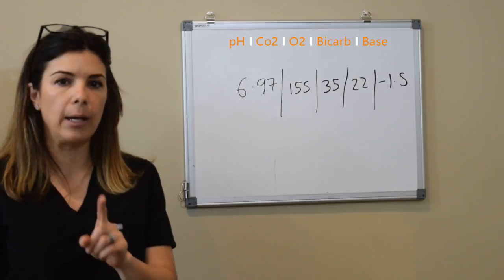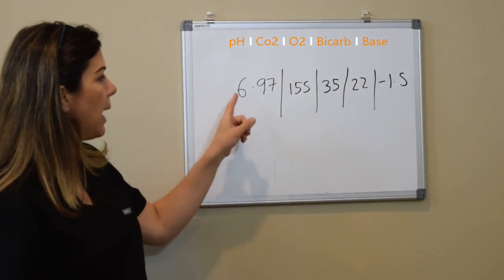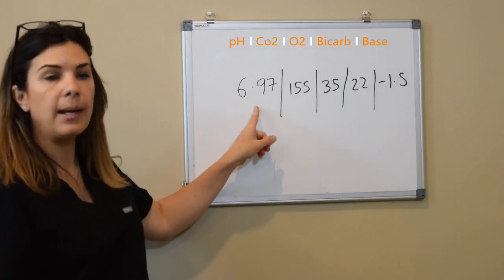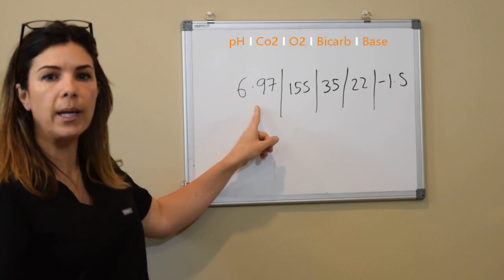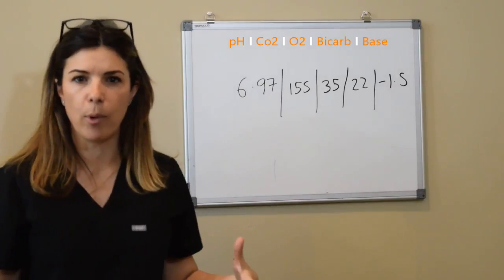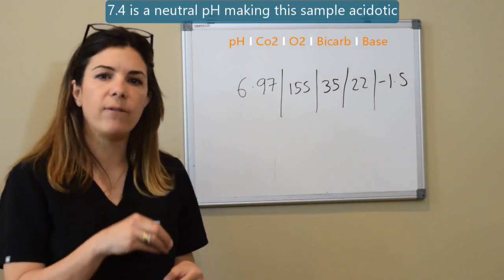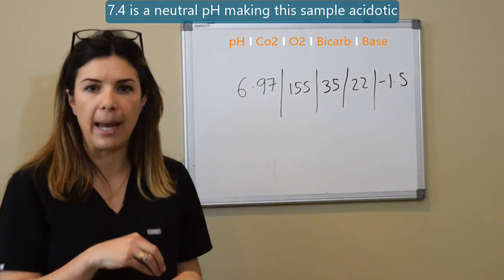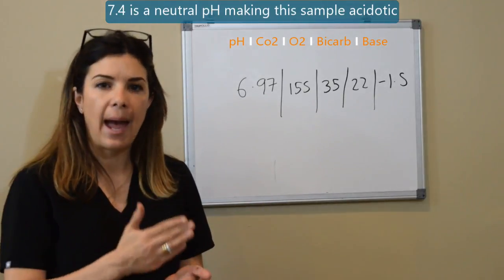So what's the first thing I look at? The first thing I look at is the pH. Now the pH here is 6.97. 6.97 is way less than 7.4, so this is a very acidic blood gas sample. So we have acidosis here.